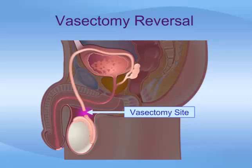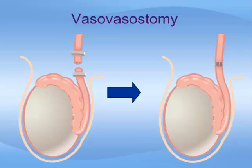The vasectomy reversal procedure involves a microsurgical technique that takes the cut ends of the vas deferens and reconnects them, allowing the small tubes to carry sperm from the testicles and into the ejaculatory system. The most common vasectomy reversal procedure is the vasovasostomy, whereby the cut ends of the vas deferens are joined back together to recreate an open channel.